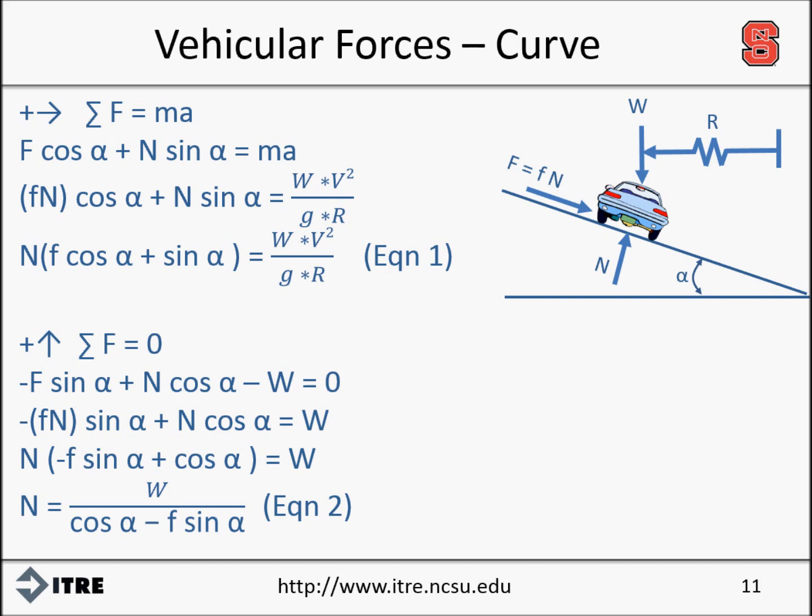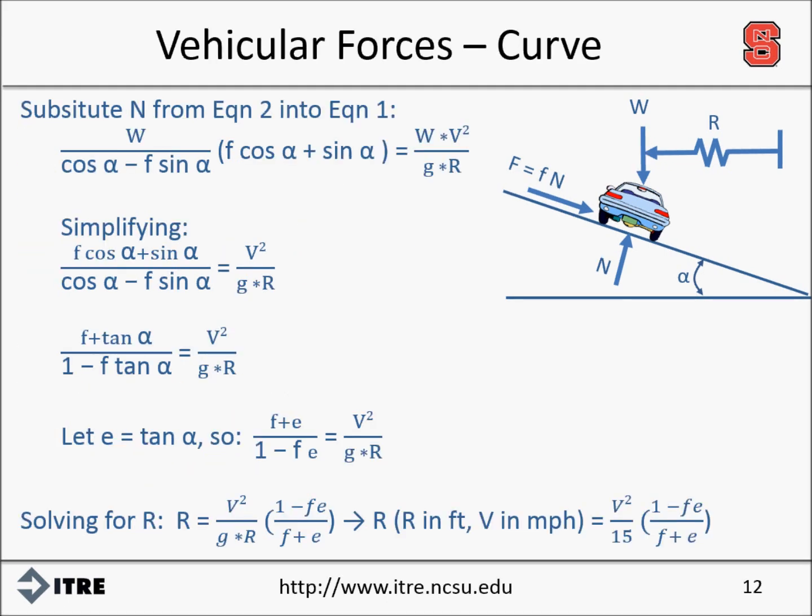Using our relationships for horizontal and vertical forces, we can develop two equations which will be used to solve for the radius of the curve. After substituting our second equation into the first and simplifying, we arrive at the equation for the radius. In terms of US customary units, with radius in feet and speed in miles per hour, R equals V squared divided by 15 times (1 minus F times E) divided by (F plus E), where E is the superelevation rate and F is the side friction factor.